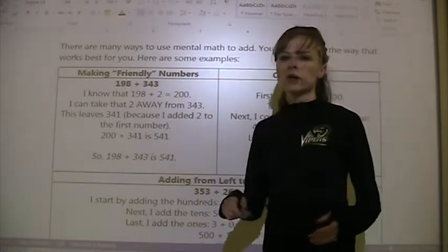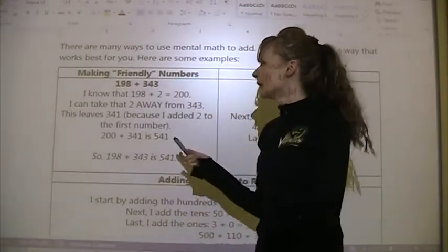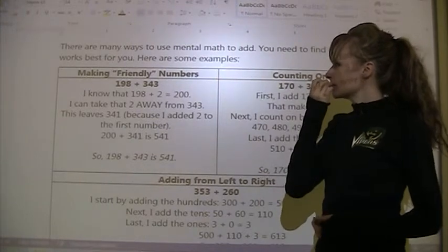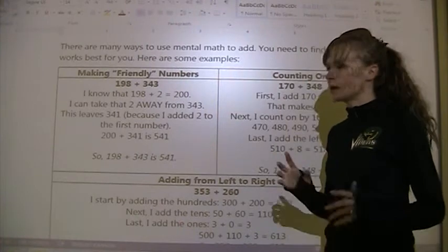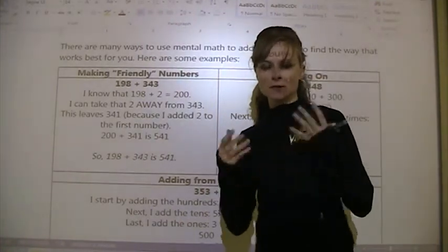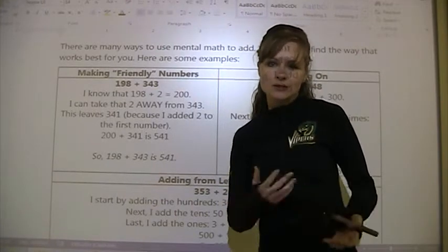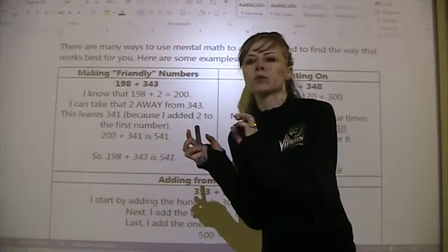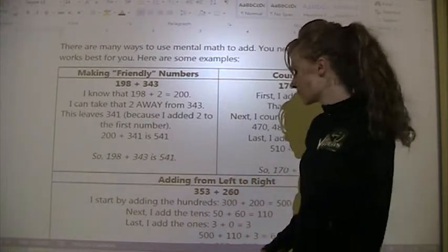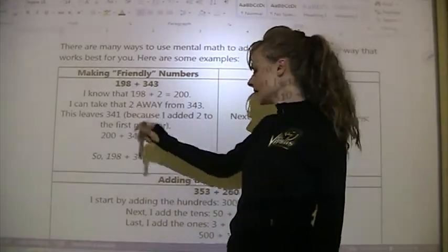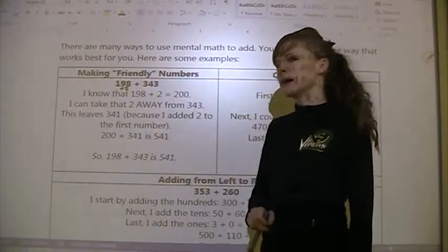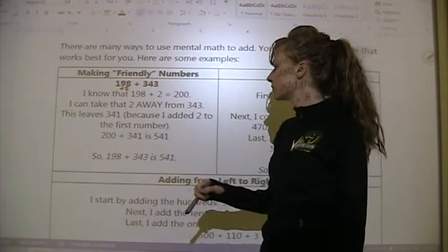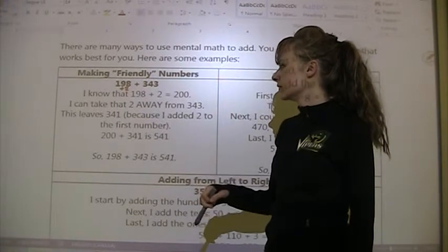Let's review making friendly numbers. If we have 198 plus 343, friendly numbers are numbers that are easier to think about in your head — basically rounding away the ones and then adjusting later, or taking a bit from one number and putting it on the other to make both easier to work with. So 198 is only 2 away from 200.